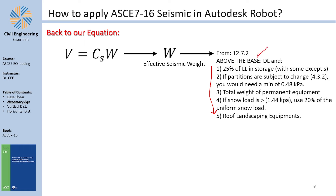This answers the classic question: if a building has below-grade basement stories, do you include their mass? According to section 12.7.2, the answer is no — only mass above the base is included in the effective seismic weight.